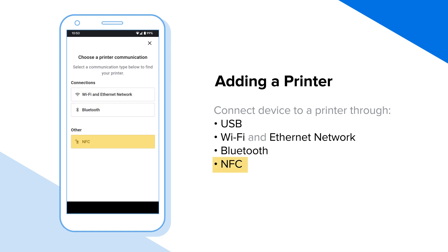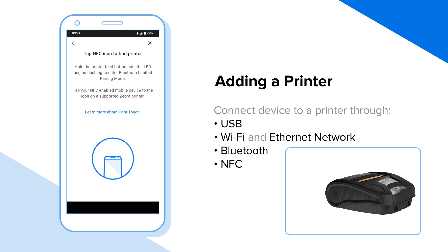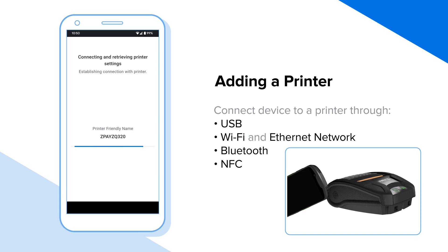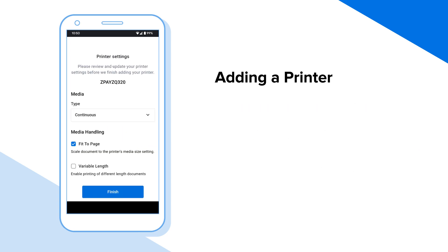Tap NFC on the printer you are connecting to. Tap the Android device to the NFC icon on the printer. A searching screen displays while the app searches for printers. A connecting screen will appear as the printer is being linked with your device. Upon a successful connection, the settings screen displays.